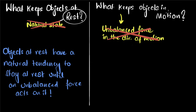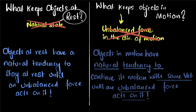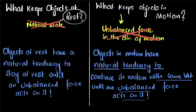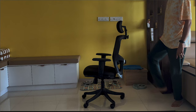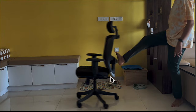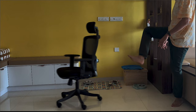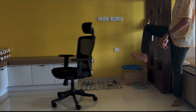So what's the right answer — what keeps objects in motion? Well, just like before, nothing. Objects in motion have a natural tendency to continue their motion with the same velocity until an unbalanced force acts on it. Once the chair is in motion, it doesn't need any unbalanced force to stay in motion. Things in motion have a natural tendency to continue their motion with the same velocity in that same straight line.